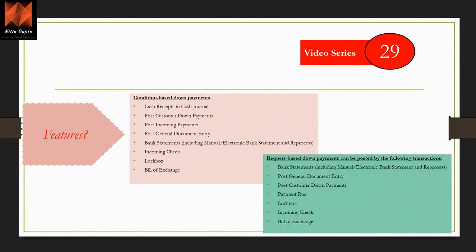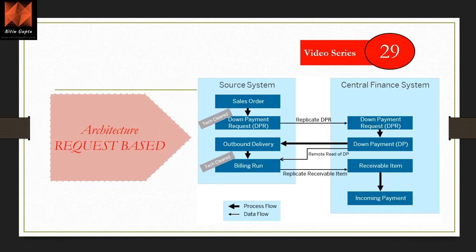Now let's understand the architecture for request-based. On the source side, you create a sales order and then you create a down payment request on top of that sales order. The down payment request is then technically cleared — exactly as in a Central Payment scenario. The down payment request is then replicated as an open request in the Central Finance system. On the CFIN side, you make a payment, since all payments flow from the S4 HANA system.